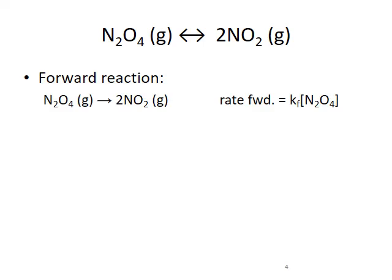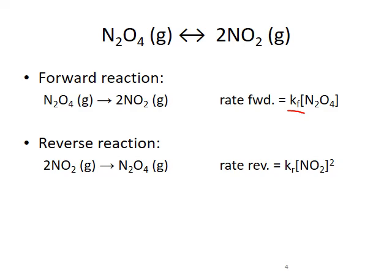In these general rate laws, the forward rate is equal to the forward rate constant KF times the concentration of the reactant for the forward process, N2O4. The reverse process rate law states that the rate of the reverse reaction equals the rate constant KR times the concentration of NO2, which is second order with respect to nitrogen dioxide, so it is squared.